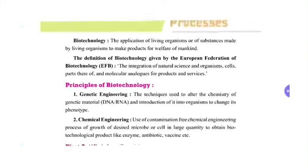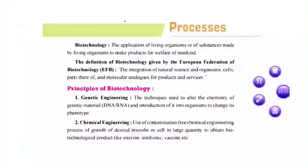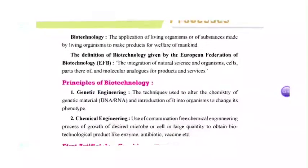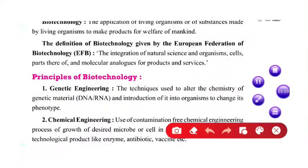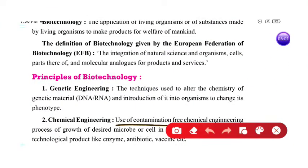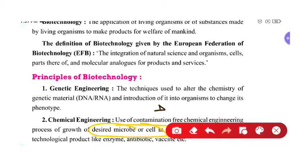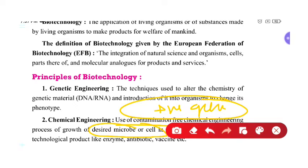Let me explain chemical engineering with a good example. In chemical engineering, we use controlled processes to develop desired microbes or positive genes that can then be developed and introduced into other organisms. It involves two organisms working together in this process.